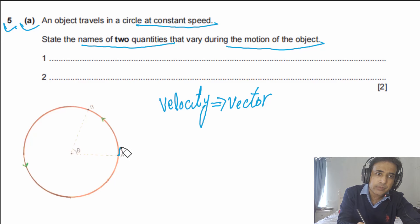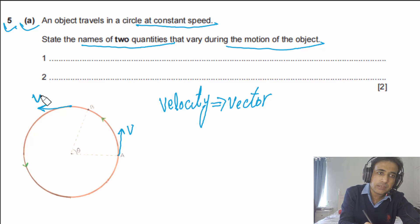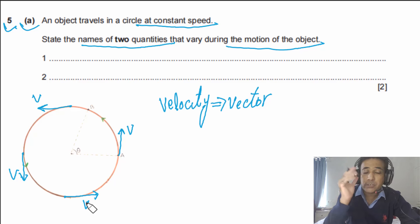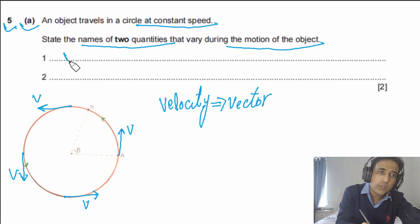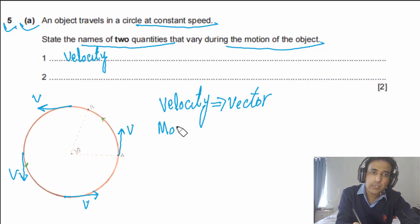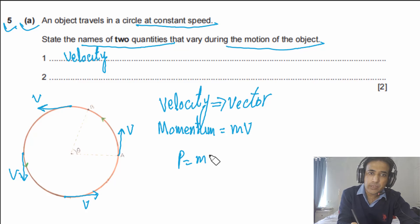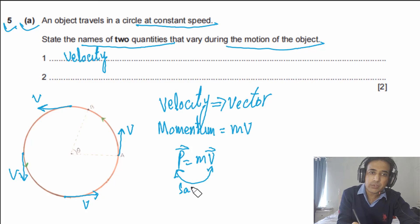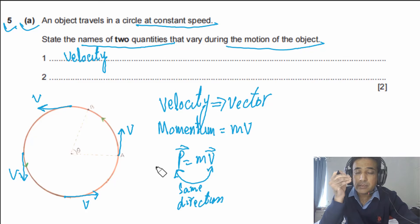Velocity is a vector quantity — it has direction. When the object is at one point, its velocity points one way; at other points around the circle, the direction changes. So the direction of velocity is changing, which means velocity itself is changing. That's one quantity. We can also think about momentum: p = mv. Since v is a vector, momentum is also a vector, and momentum and velocity share the same direction. Since the direction of velocity is changing, momentum is also changing.